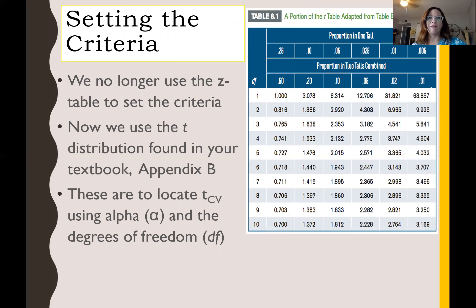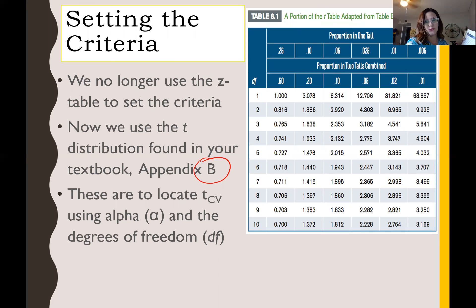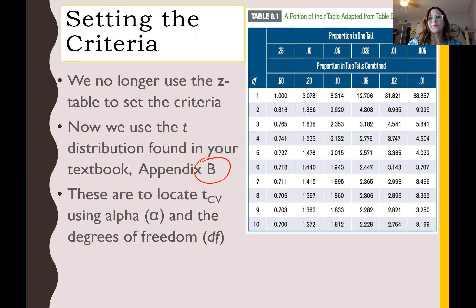We're going to rely heavily on degrees of freedom, meaning we'll look up our criteria using degrees of freedom. Your textbook — the newest version — has the T table or T distribution at Appendix C, table C2, on page 529 in the hard copy. We're no longer using that Z table because there is a different distribution for every single degree of freedom. Now we use a T critical value as our criteria, set up using our alpha level and degrees of freedom.